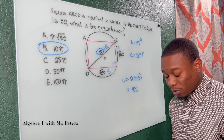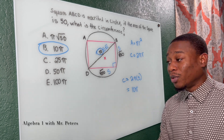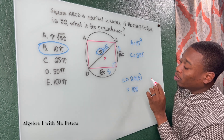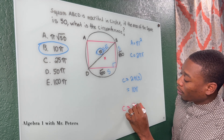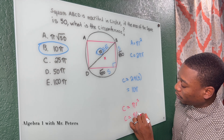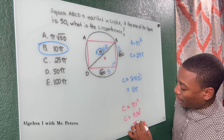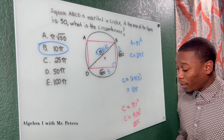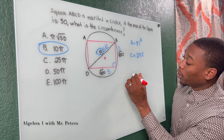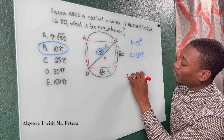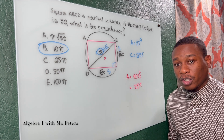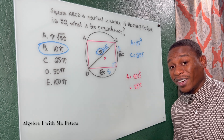Students sometimes moving too fast end up mixing these two formulas or plugging into the wrong one and get 25 pi as an answer. Please make sure you're careful and understand what they're asking. If they were asking for the area, the area would be pi times 5 squared, which is 25 pi. Just make sure you don't confuse area and circumference when solving on the SAT.